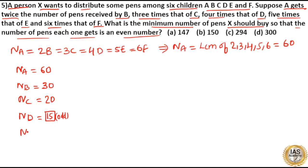Number of pens with E is 1 by 5th of 60 which is equal to 12. Number of pens with F is 1 by 6th of 60 which is equal to 10.